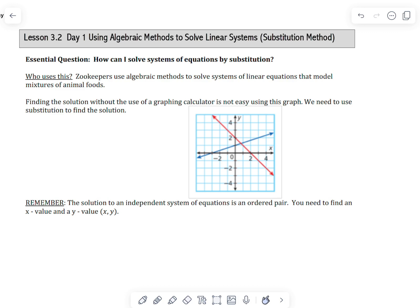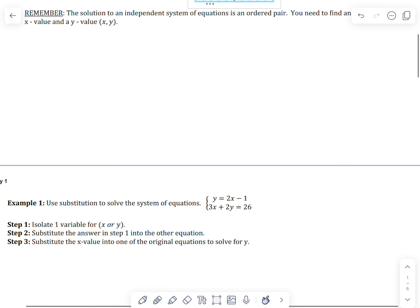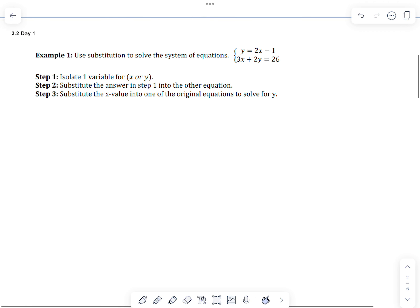What we're going to do next is we're going to solve by substitution where we want to solve it algebraically. So here are the steps that we're going to go through. Step one is you want to isolate one of the variables, either the x or the y. Then we substitute that answer into step one into the other equation, and then substitute the x value into one of the original equations to solve for y.